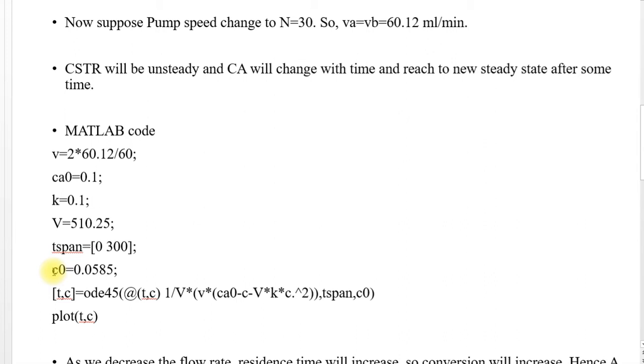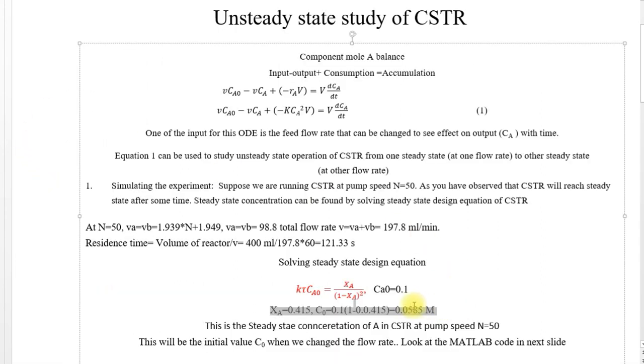And this C0 is initial condition, initial concentration at previous flow rate. So this one is the one we got it here. You can see, this is the concentration where we got at previous steady state.